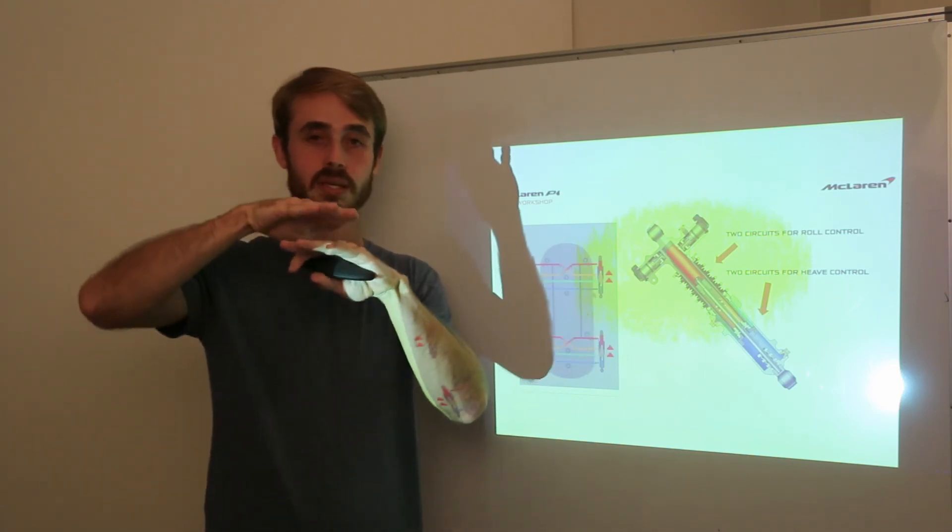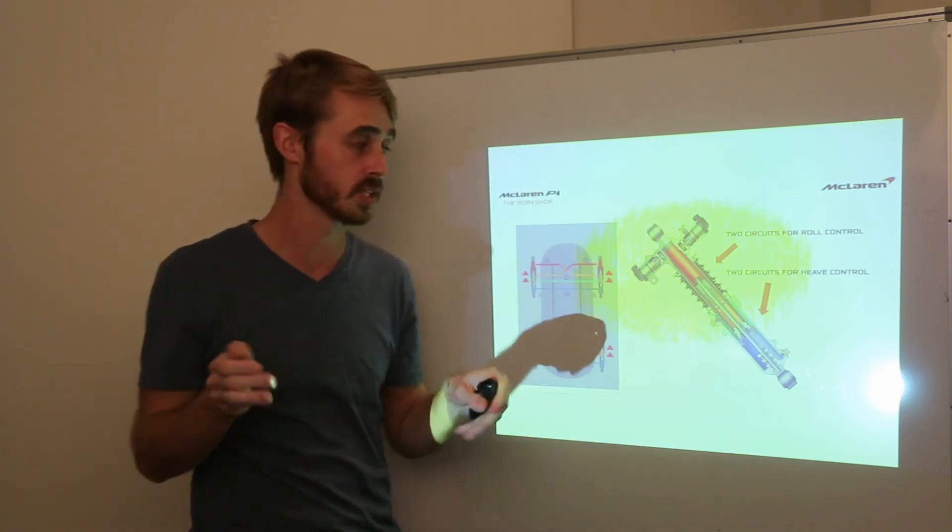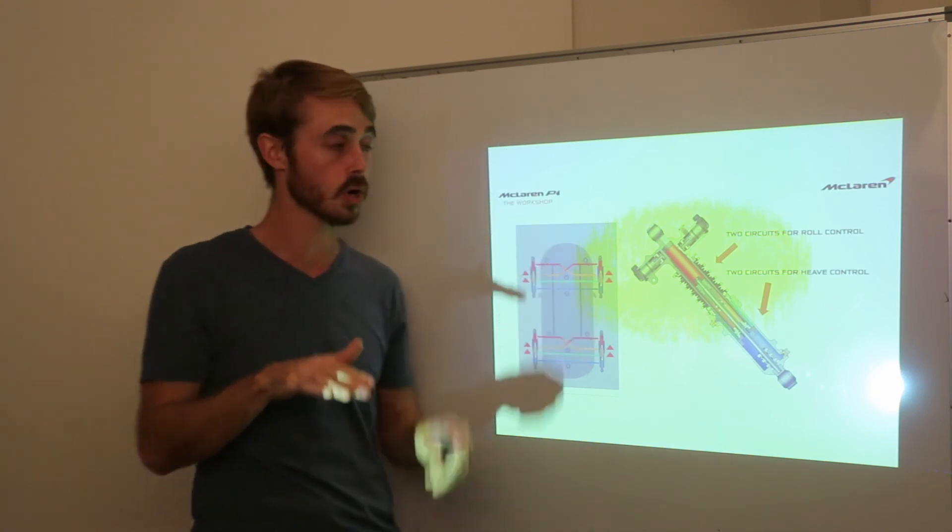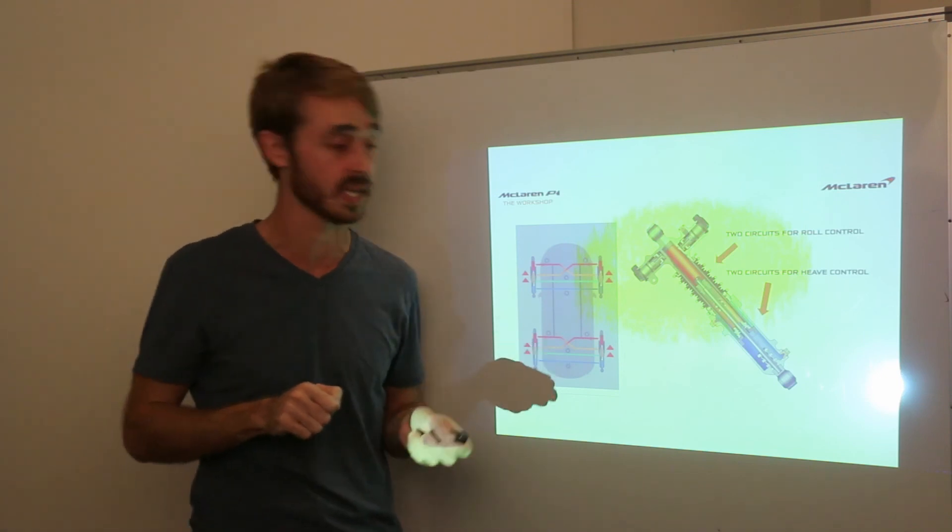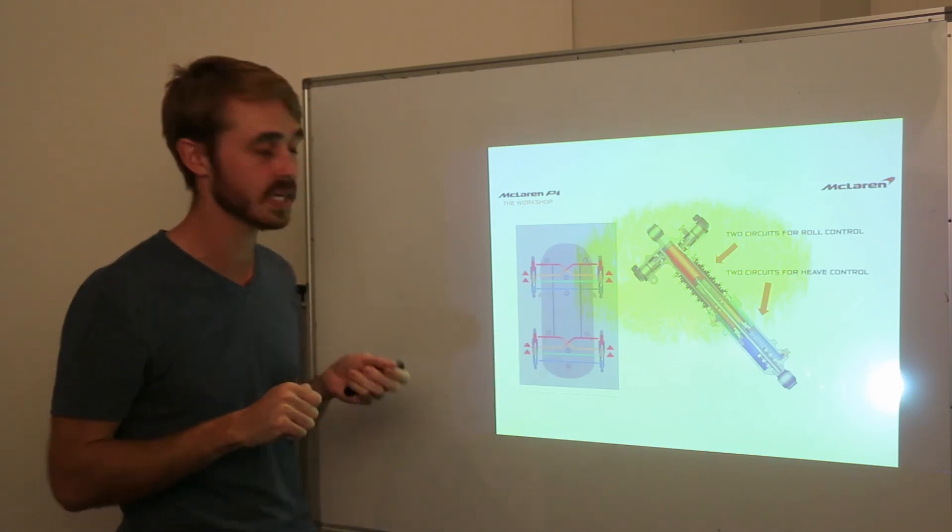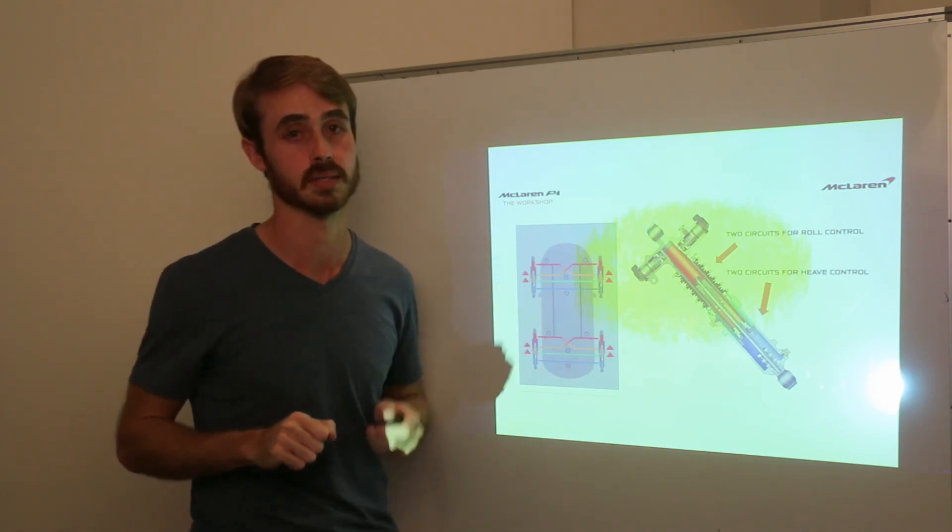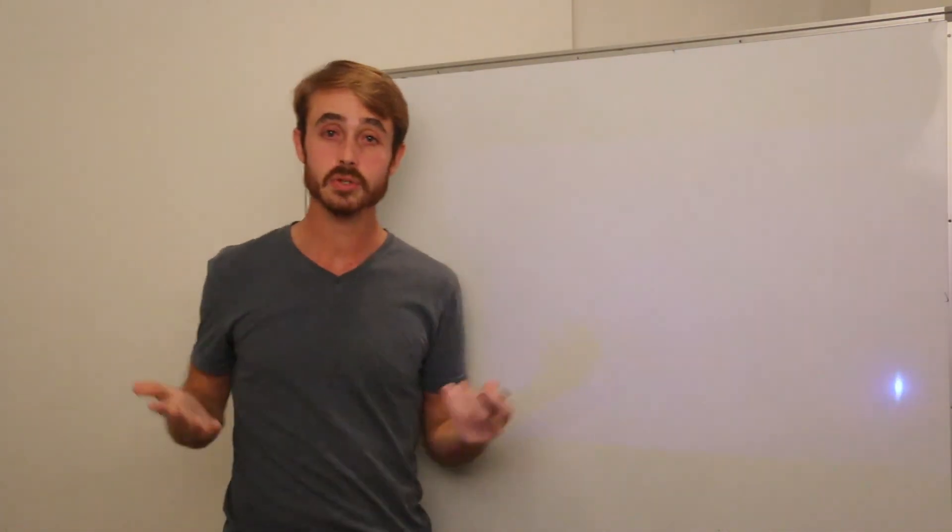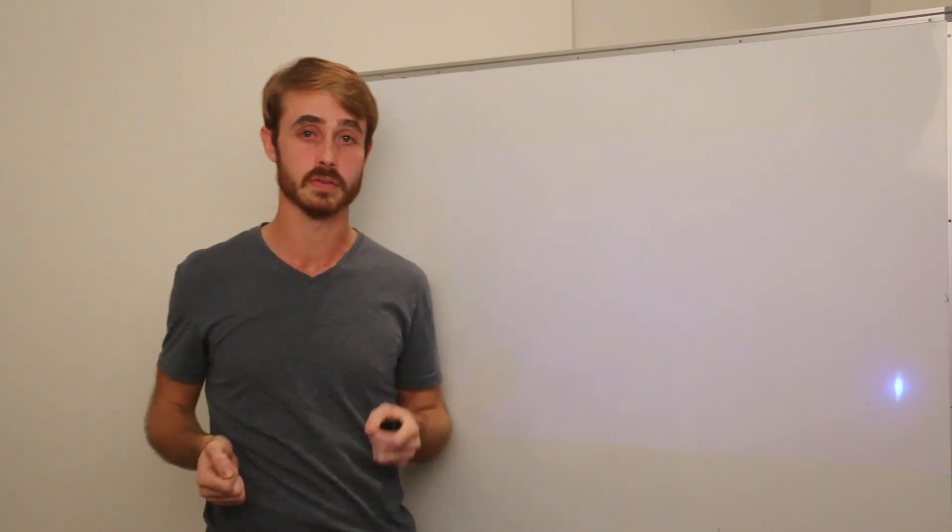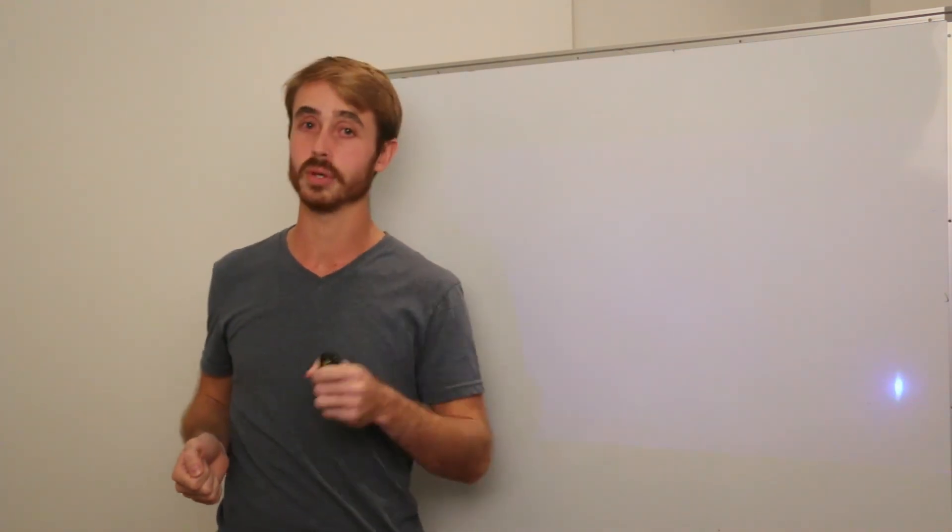The McLaren does this perfectly. Its system allows it to really get a good handle on roll, and that really enhances the aerodynamics as well as the suspension on the car. So that's all for the analysis of the active aerodynamics of the P1. Thanks for watching and enjoy the other videos.